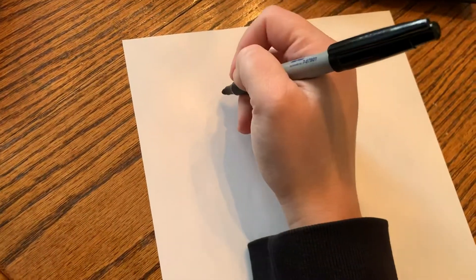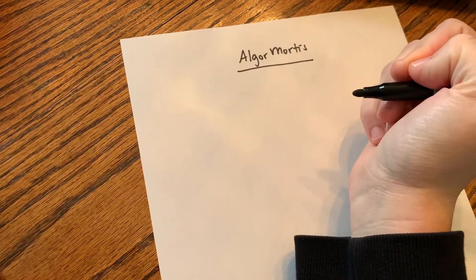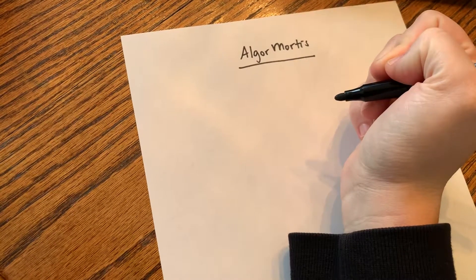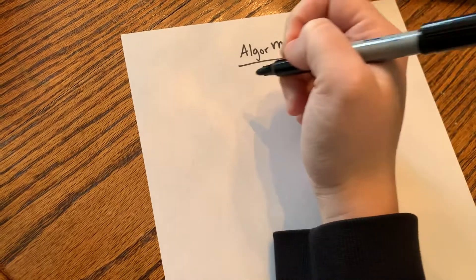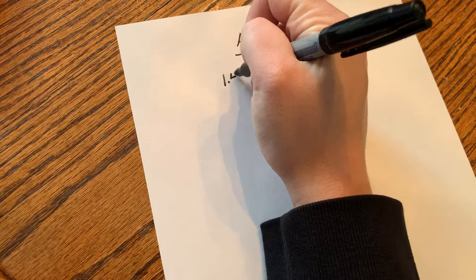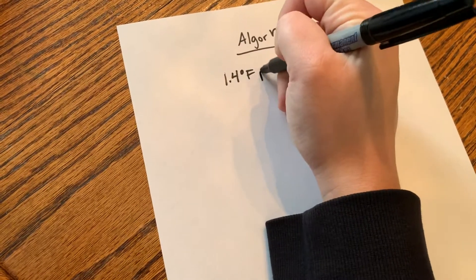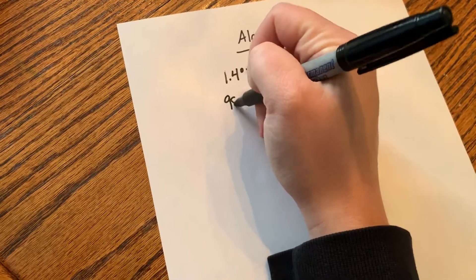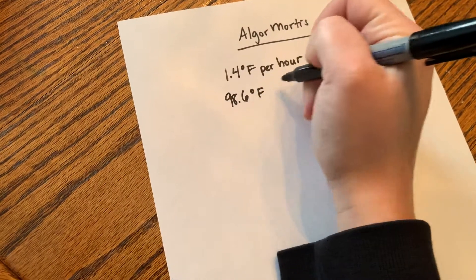we generally say that people lose body temperature or body heat at a rate of 1.4 to 1.6 degrees Fahrenheit per hour. So for our class, we're just going to say 1.4 degrees per hour. And we know that regular body temperature is 98.6 degrees Fahrenheit.